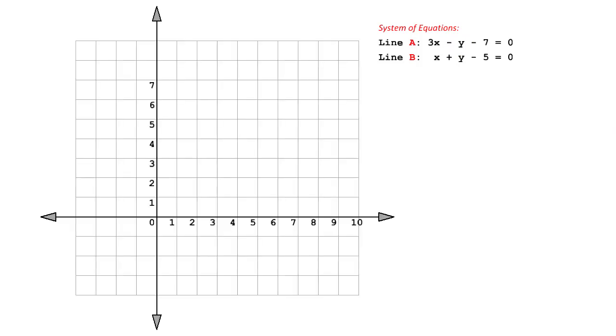That is because if we give some arbitrary values to x and get the corresponding values of y and plot those x, y pairs as points on a coordinate frame like this and connect all those points, we get straight lines.